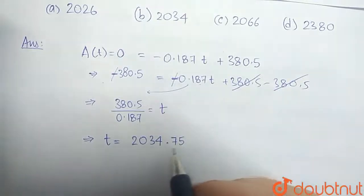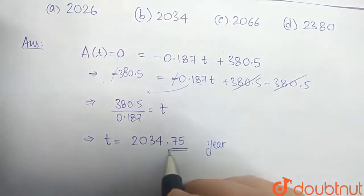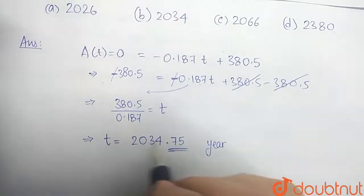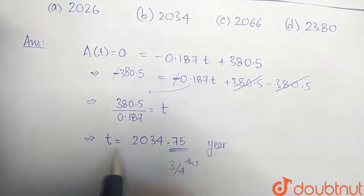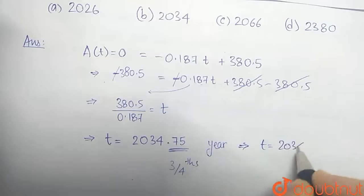Now with this .75, the t we obtained is the year. So this 0.75 signifies that the Arctic sea ice will cease to exist after 3/4 of the year 2034 has passed. But we know that even if it occurs 3/4 of the year, still the year will remain 2034. Therefore, we will take it as 2034.